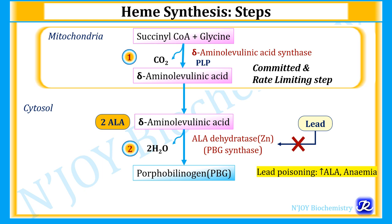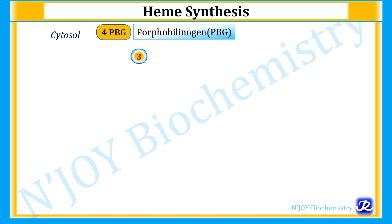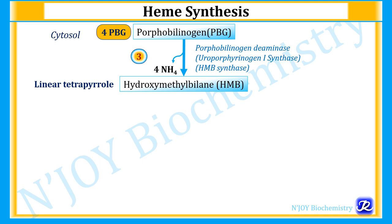Step 3 occurs in the cytosol: four porphobilinogen molecules combine to form hydroxymethylbilane (HMB), a linear tetrapyrrole, with release of four ammonia molecules. This reaction is catalyzed by porphobilinogen deaminase, also called uroporphyrinogen 1 synthase or HMB synthase — the enzyme has three names.